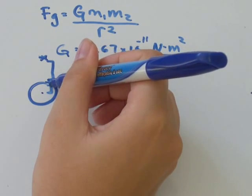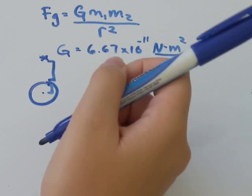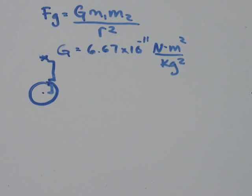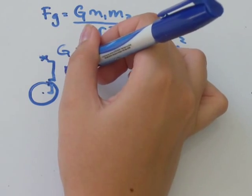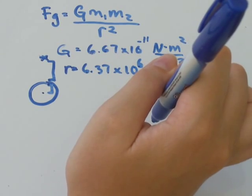So we need to add on also the radius of the Earth. So in your formula sheets, you should be given stuff like gravitational constant and radius of the Earth. If you're not, just so you know, the radius of the Earth is 6.37 times 10 to the power of 6 meters.